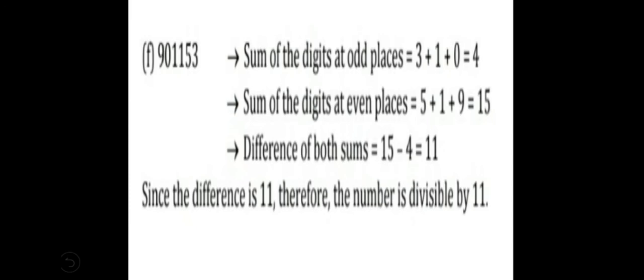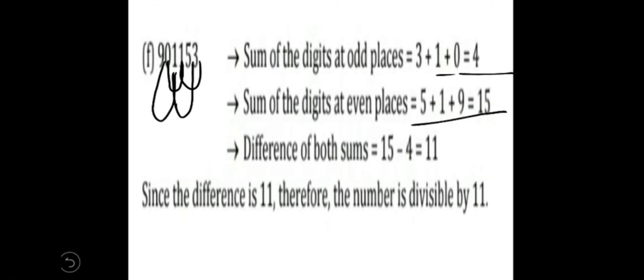For the last number in question 4: odd places give 3 plus 1 plus 0 = 4, and also adding further digits; even places give 3 plus 5 plus 1 = 9, plus 9 is more. The difference works out to 11, so this number is divisible by 11.